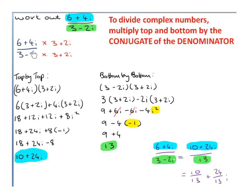Now the denominator: (3 minus 2i)(3 plus 2i). Expanding: 3 times 3 is 9; 3 times 2i is plus 6i; minus 2i by 3 is minus 6i; minus 2i by plus 2i is minus 4i squared. The plus 6i and minus 6i cancel, and i squared becomes minus 1, so minus 4 times minus 1 is plus 4. And 9 plus 4 is 13. A shortcut: since we're multiplying a complex number by its conjugate, square the real part (3 squared is 9) and square the imaginary coefficient (minus 2 squared is 4), and 9 plus 4 is 13.